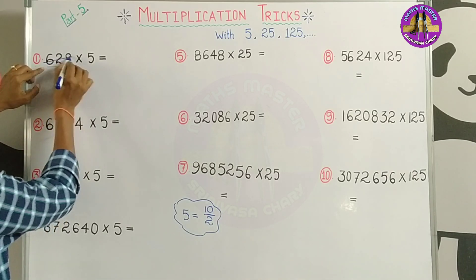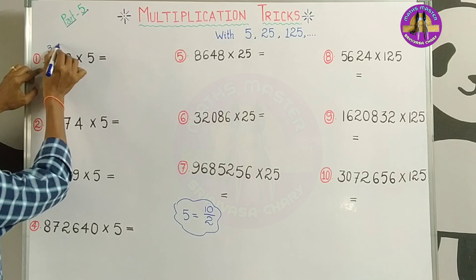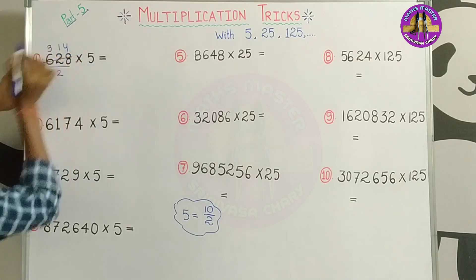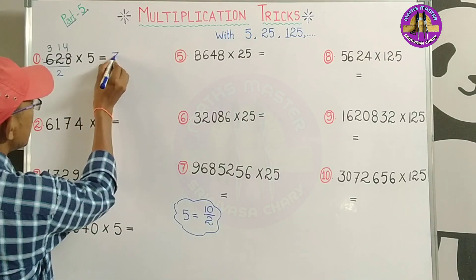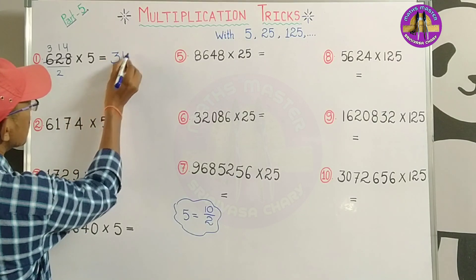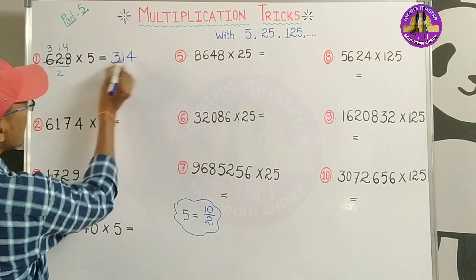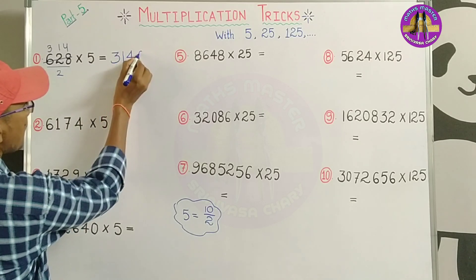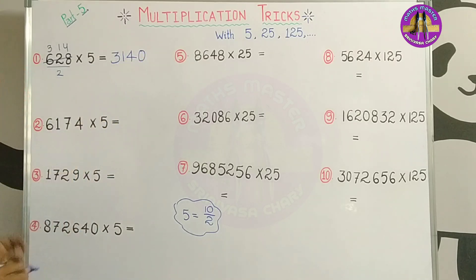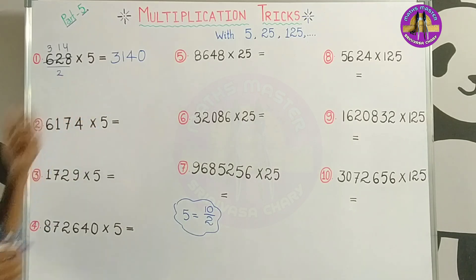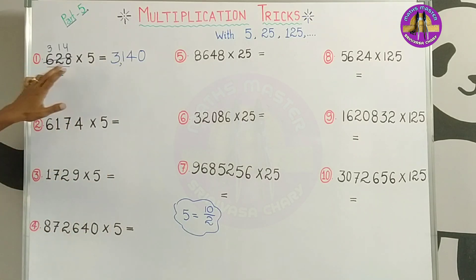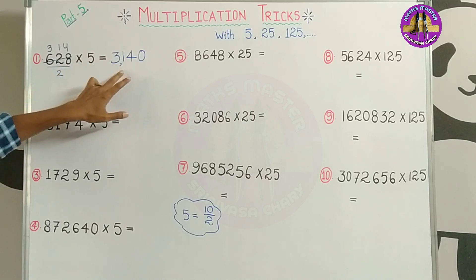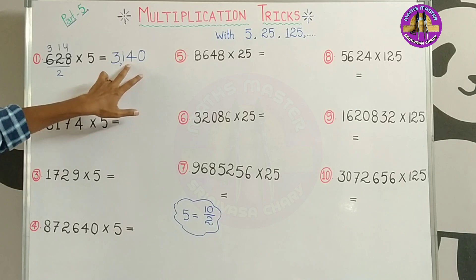2 threes are 6, 2 ones are 2, 2 fours are 8. So the multiplication gives 3, 1, 4. So our answer is 3,140. So 628 into 5 multiplication is 3,140.